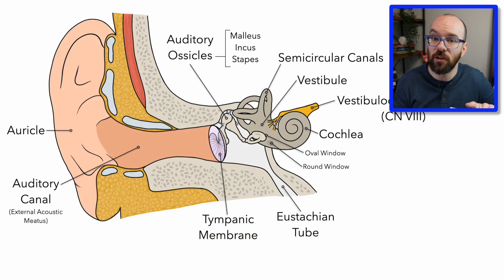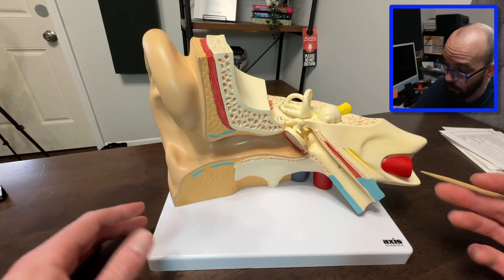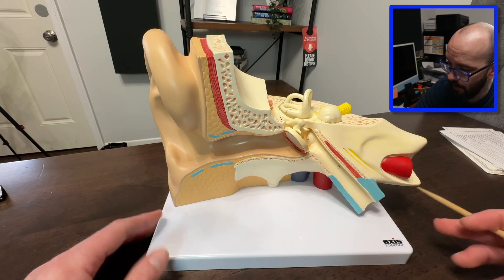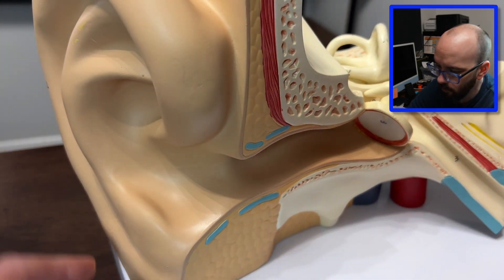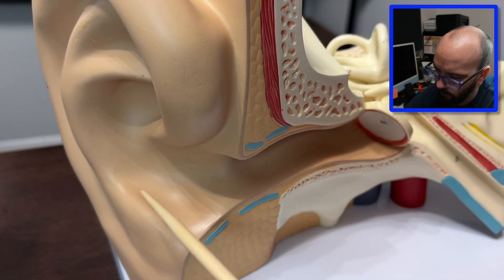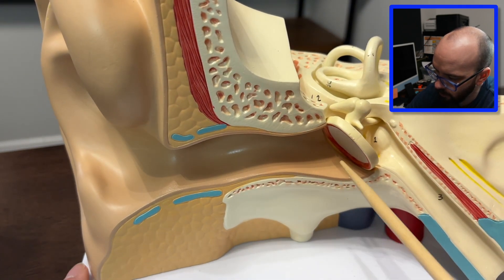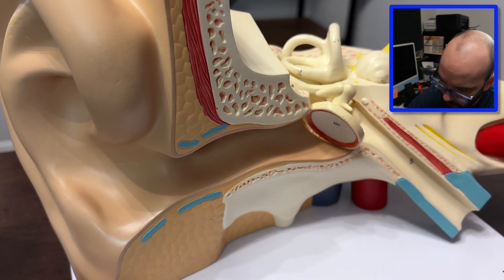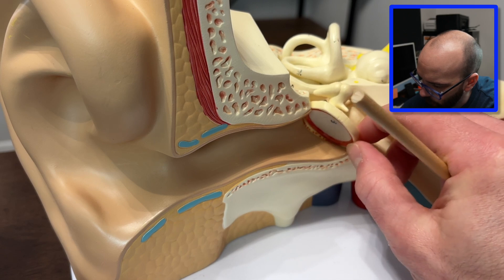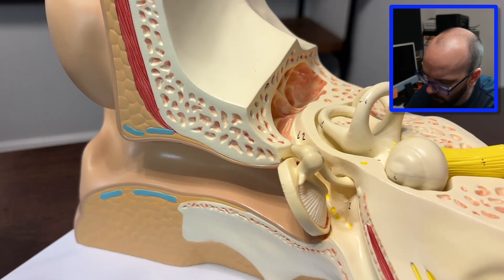Now let's look at the 3D model so we can see all these structures physically located three-dimensionally. Here's our 3D ear model from Axis Scientific. We've got the auricle funneling sound down through the auditory canal, which comes up against the tympanic membrane. The tympanic membrane vibrates whenever sound comes in, and it's connected to the auditory ossicles.